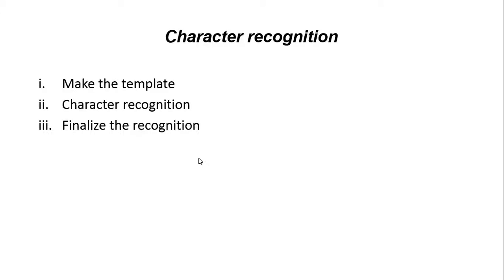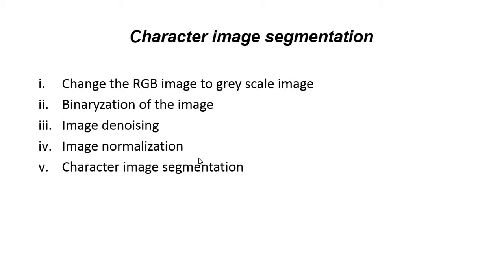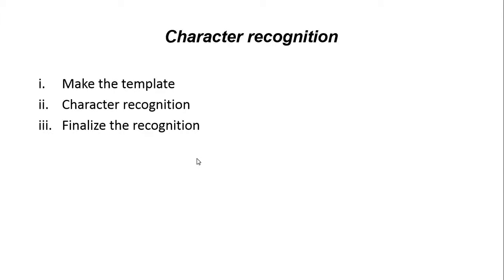When we do the correct image segmentation, firstly we are going to determine the top and bottom boundary of the characters, and then determine where the characters are. After we find the left and right character boundary positions, we can cut the single character images and save them, and then do the character recognition.